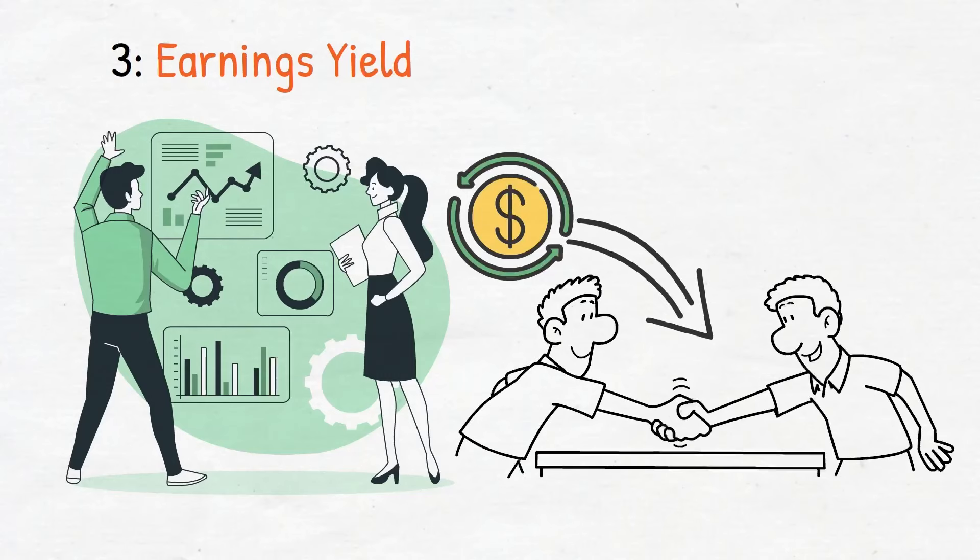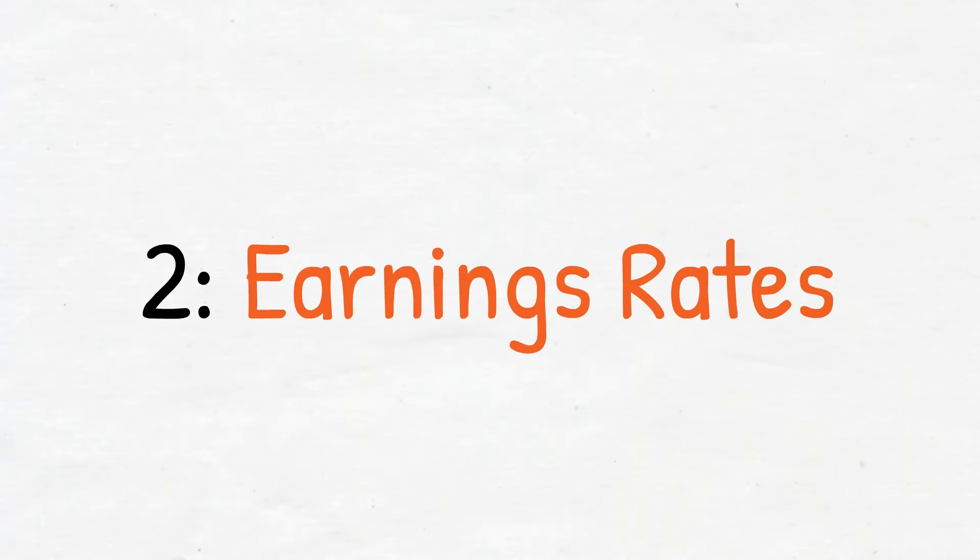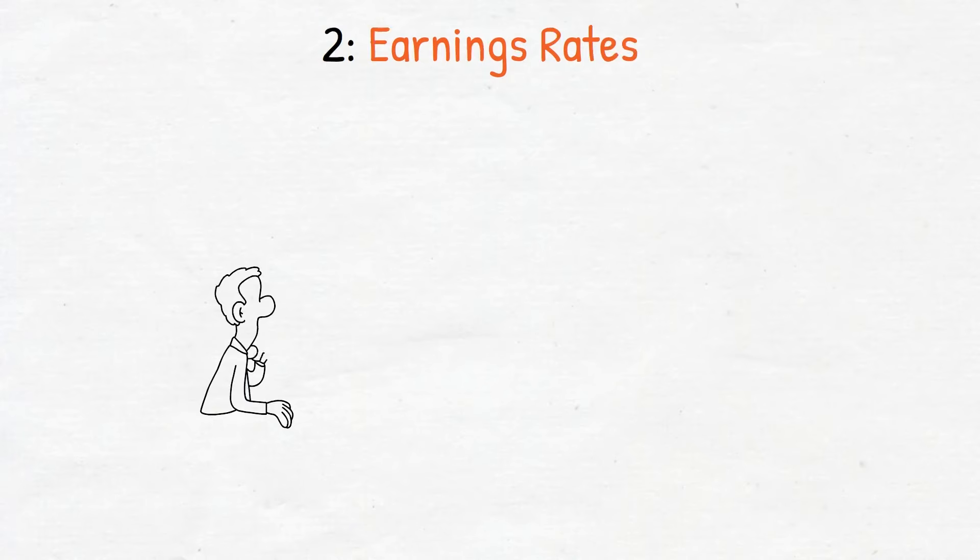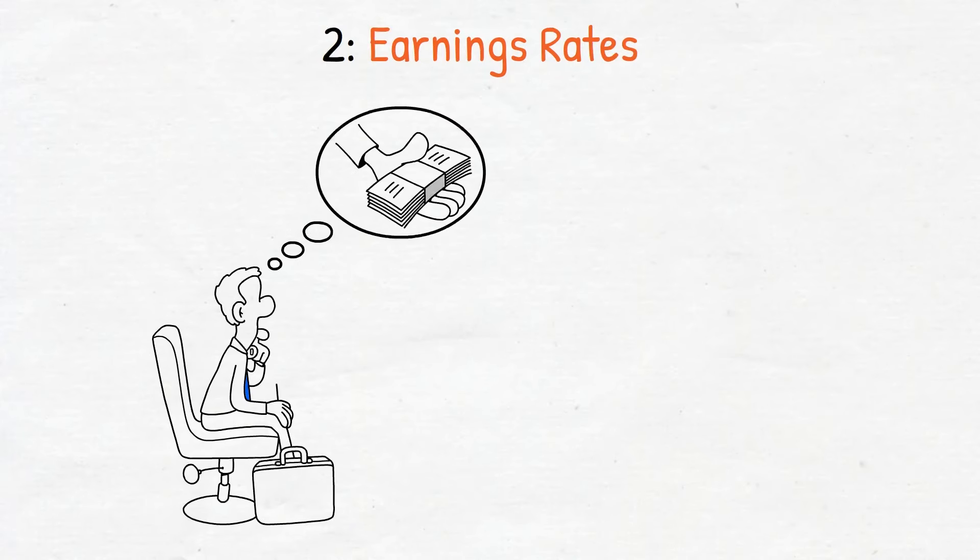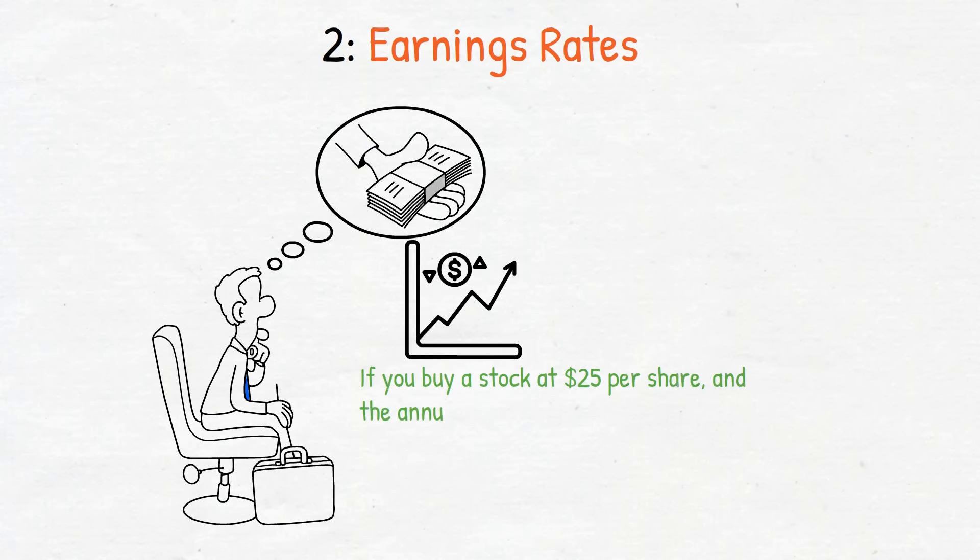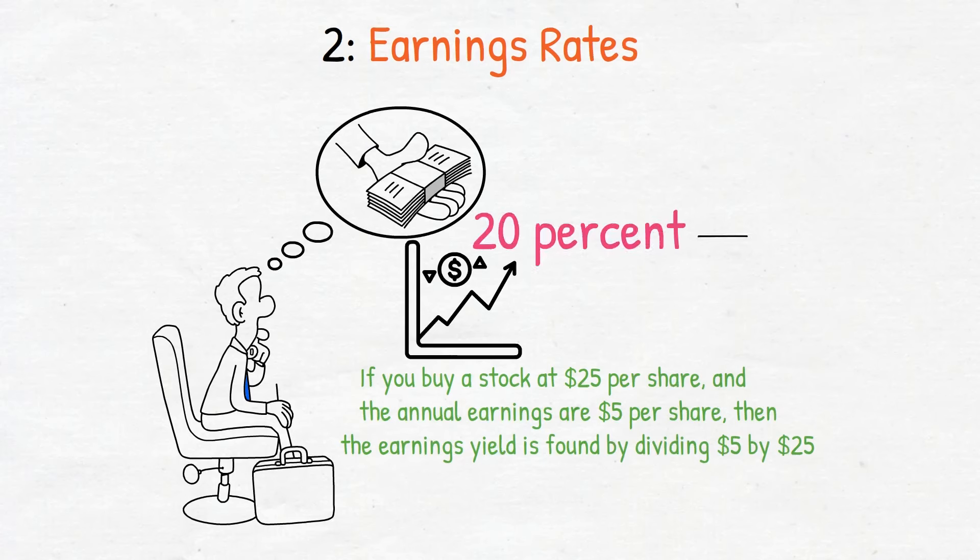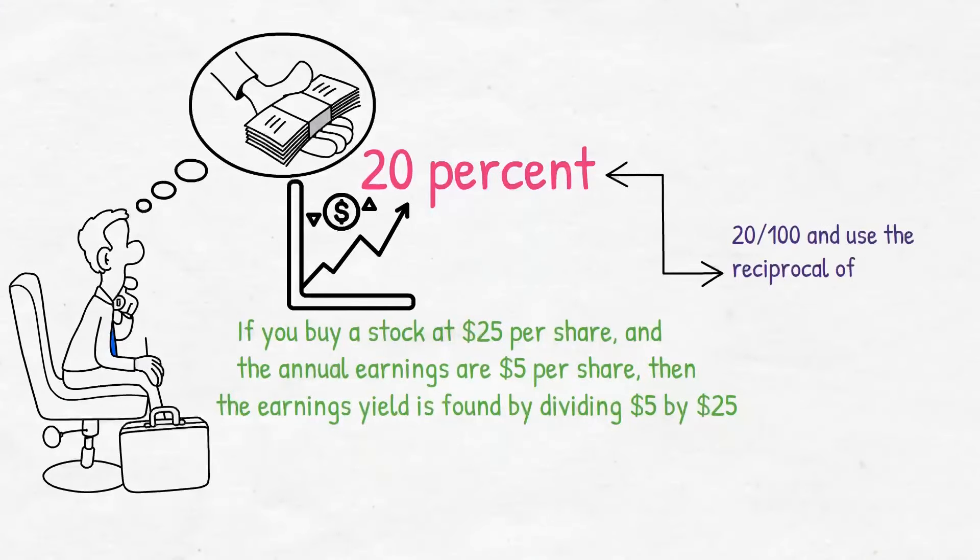Number two: earnings ratio. The financial news often highlights an earnings ratio, which is the price per share divided by earnings per share. This ratio is just another way of interpreting the earnings yield. For example, if you buy a stock at $25 per share and the annual earnings are $5 per share, then the earnings yield is found by dividing $5 by $25. This produces an earnings yield of 20 percent. To find the earnings ratio, you simply convert the 20 percent to 20 over 100 and use the reciprocal of this figure, which in this case is 5.